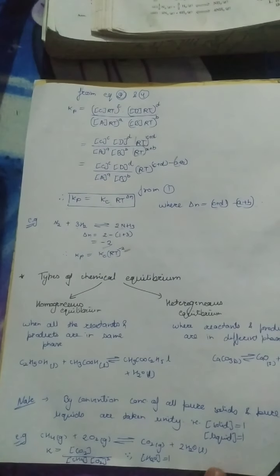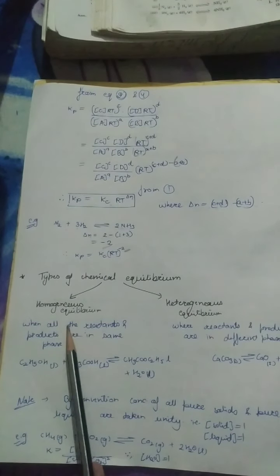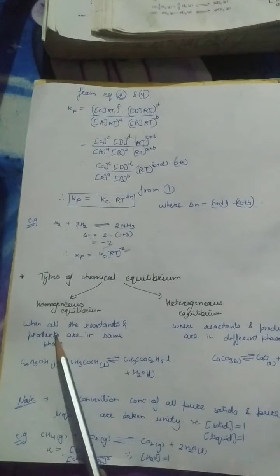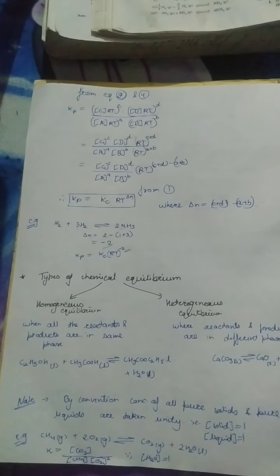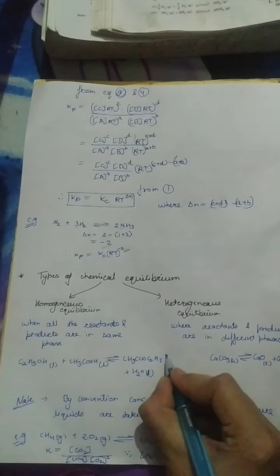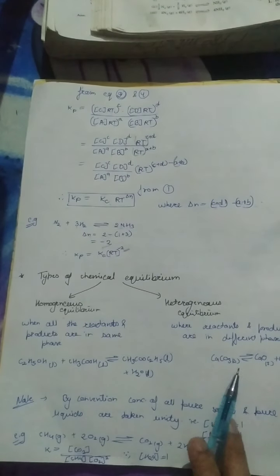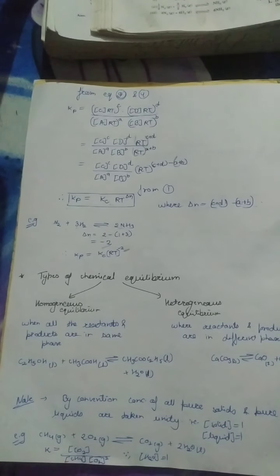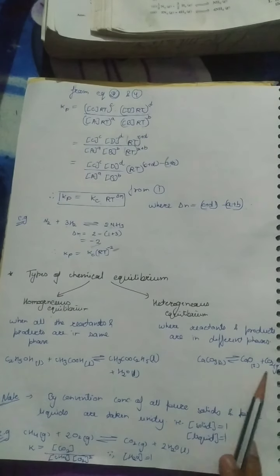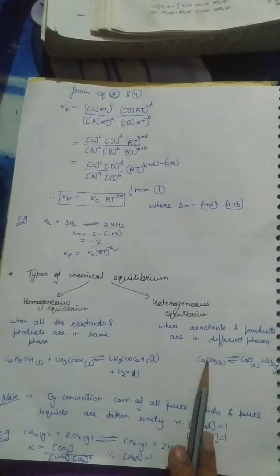Now we come to the types of chemical equilibrium. There are two types: homogeneous equilibrium and heterogeneous equilibrium. Homogeneous means all species are in the same phase — all liquid, all gases, or all solid. Heterogeneous means the reactants and products are in different phases.